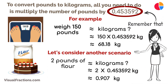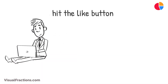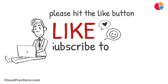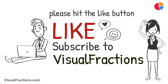And there you have it. Converting pounds to kilograms is a simple process. Remember that one pound equals approximately 0.453592 kilograms. With a bit of practice, you'll become skilled at making this conversion. If you found this video helpful, please hit the like button, and for more informative conversion guides and math tips, be sure to subscribe to Visual Fractions.